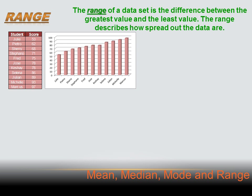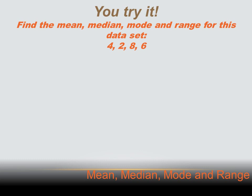We've got one more statistical concept to discuss today, and that's range. Range is not an average. Range tells us the disbursement of the data points — the amount of disparity in the data. The range of a data set is the difference between the greatest value and the least value; it describes how spread out the data is. For our class data set, the greatest value was 97 and the least value was 53, so 97 minus 53 gives us a range of 44. Now let's find the mean, median, mode, and range for a new data set.